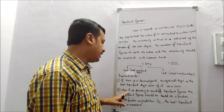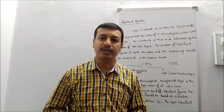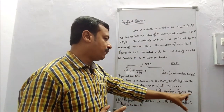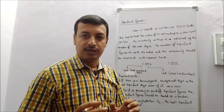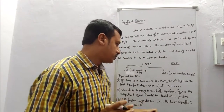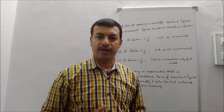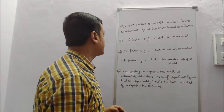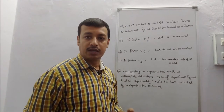Next, point number 2: when it is necessary to round off the significant figures — rounding off means bringing it to 2 digits, 3 digits, or removing decimal points — the insignificant figures should be treated as a fraction. The part on the left-hand side of the decimal point that has not been signified, we take that as a fraction.